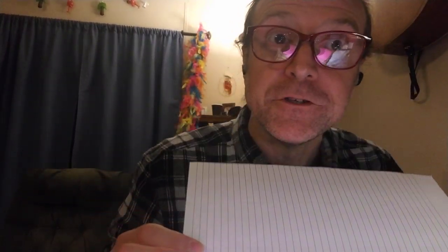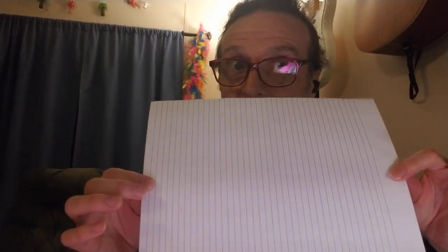So you start out with a piece of paper, but you can't work with a rectangular paper, it has to be square. So I'm going to fold it to make a little triangle, or make a big triangle.